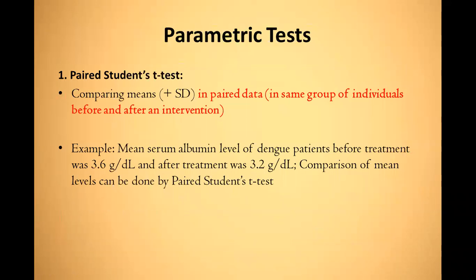First, let's talk about parametric tests. Parametric tests are quantitative tests that compare the mean or standard deviation. First is the paired Student's t-test. In the paired Student's t-test, it compares the mean in paired data — that is, in the same group of individuals before and after intervention. For example, if the mean serum albumin level of a patient is given before and after treatment.